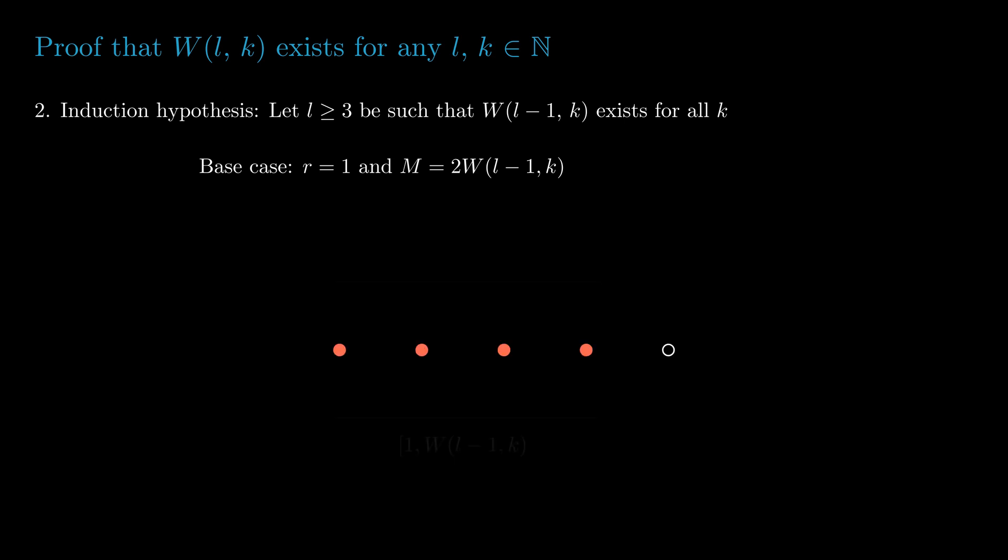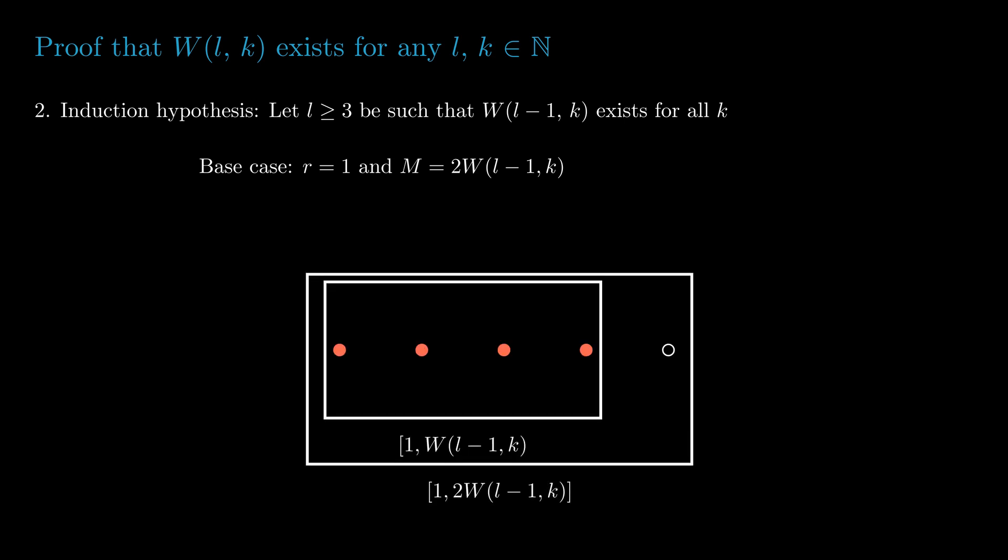We can see that in the first half of the interval we will have an (l - 1)-term monochromatic AP, and the lth term will lie somewhere in the second half. If it is the same color, we have an l-term AP. If it is not, then we have r, which is one spike.